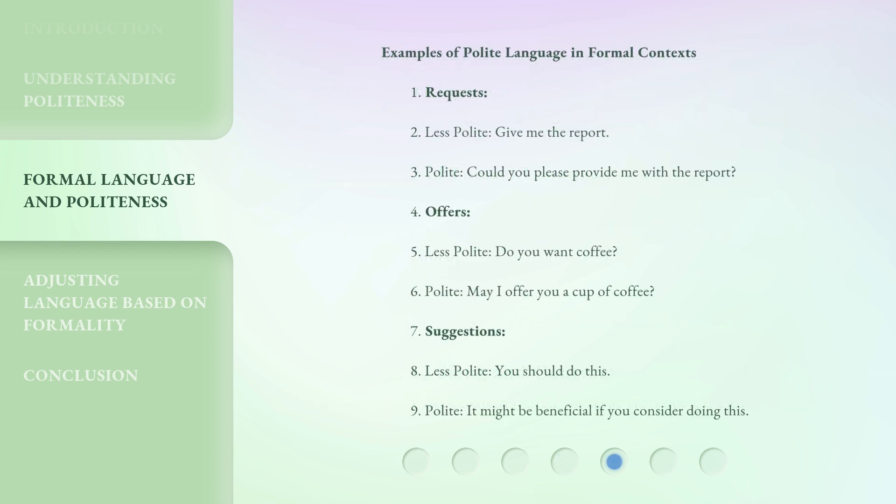Here are examples of polite language in formal contexts. For requests — less polite: 'Give me the report.' Polite: 'Could you please provide me with the report?' For offers — less polite: 'Do you want coffee?' Polite: 'May I offer you a cup of coffee?' For suggestions — less polite: 'You should do this.' Polite: 'It might be beneficial if you consider doing this.'